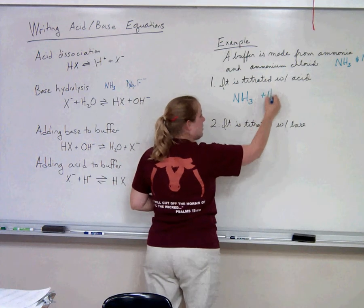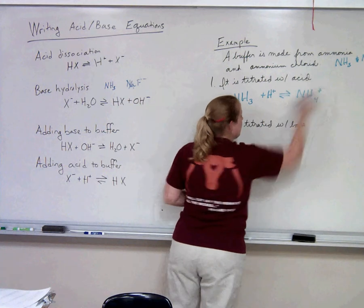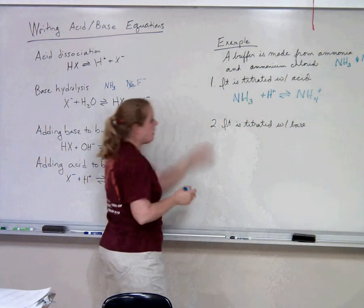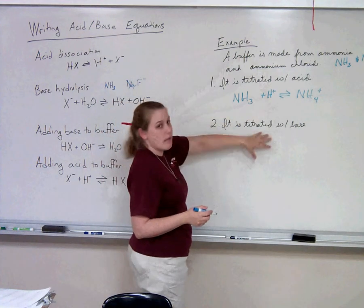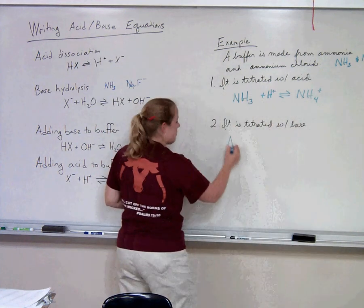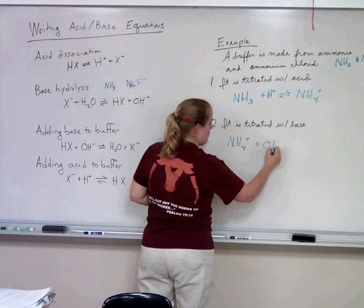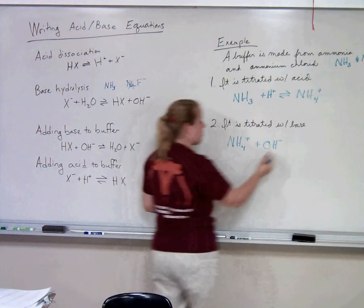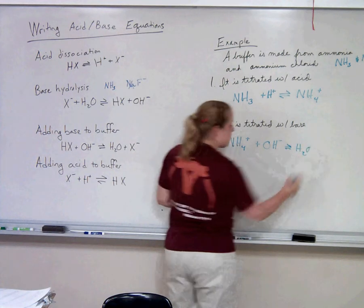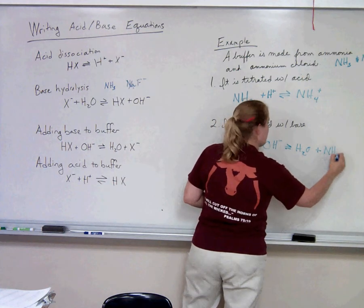add the acid to it, and it will create our conjugate acid, which we already had in the buffer. Conversely, if we titrate this same buffer with a base, it's going to be adding to the acidic portion of the buffer. We don't care about the chlorine, so we're just going to get rid of that. This hydroxide is going to steal the hydrogen away from the ammonia, giving us water, which we don't really care about as far as our KB expression and our Ka expression.